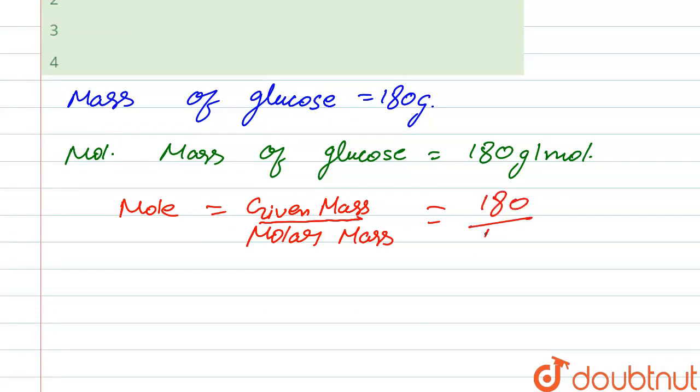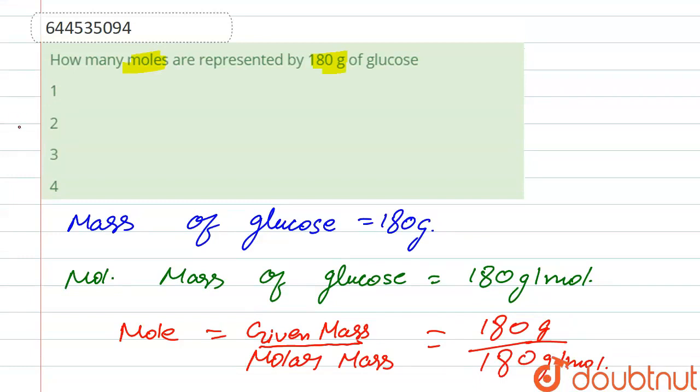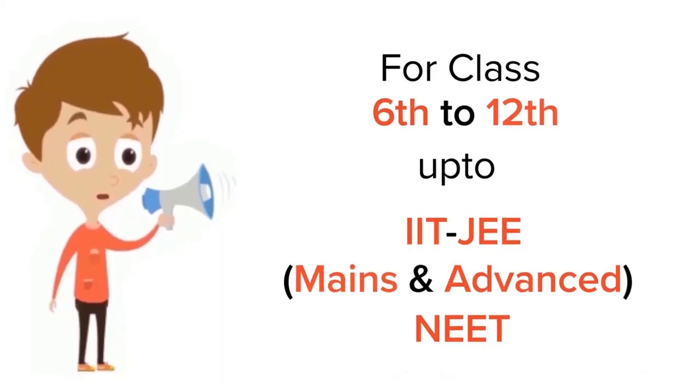And molar mass is also 180 grams per mole. So after solving, we get one mole. So here our correct option is option first. Thank you.